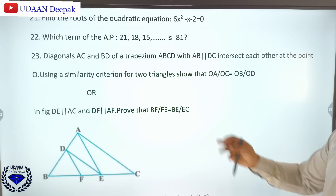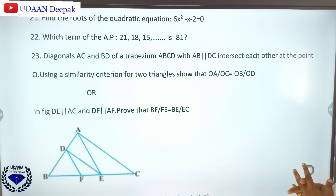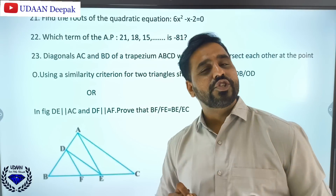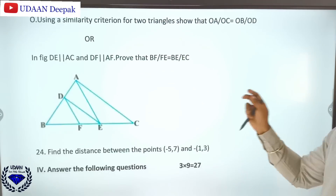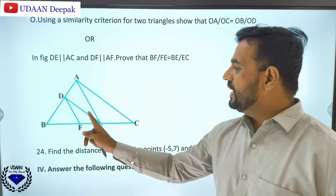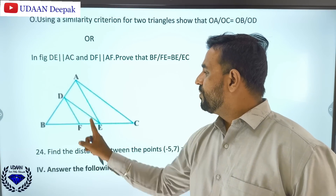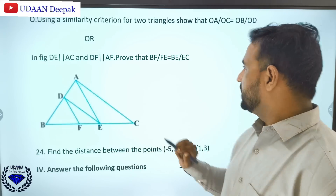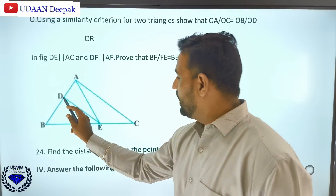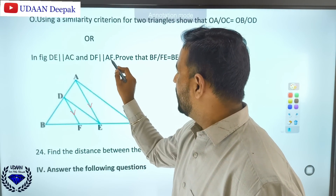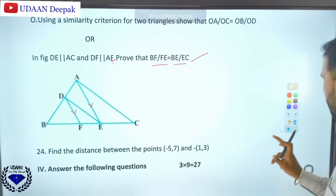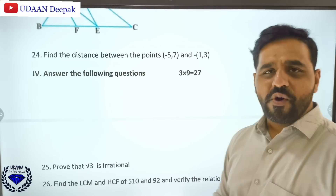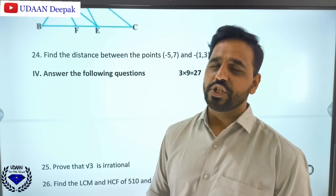Other questions include: diagonals AC and BD of a trapezium ABCD with AB parallel to DC intersect at O — use similarity criterion to show OA/OC = OB/OD. Also, given DE parallel to AC and DF parallel to AE in a triangle, prove BF/FE = BE/EC. Then directly using the distance formula, find the distance between points (-5, 7) and (-1, 3).